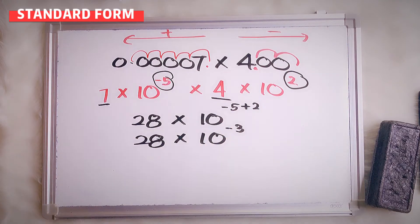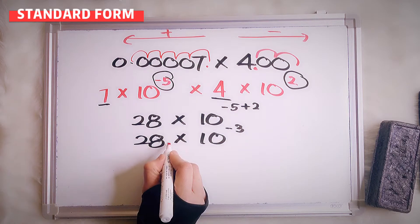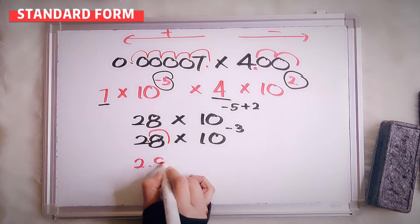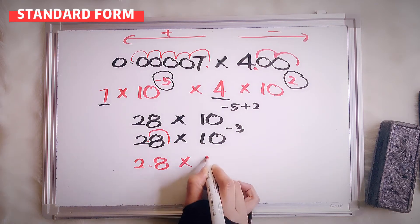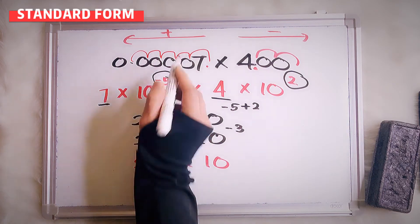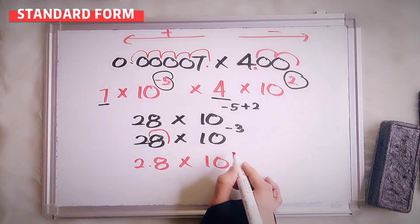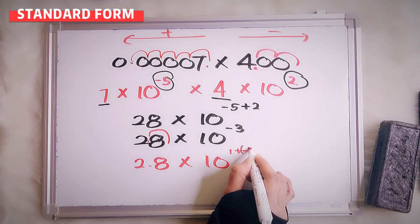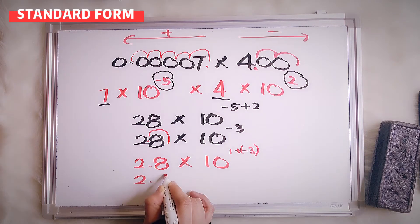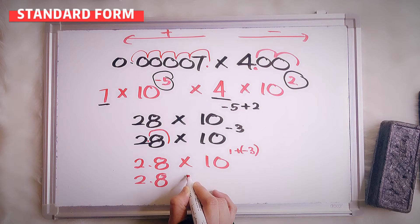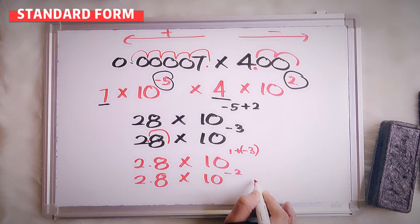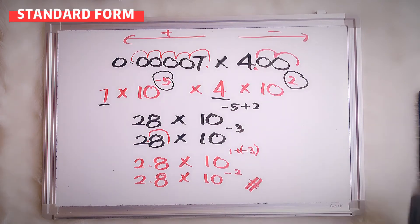So you will have 28 times 10 to the power of negative 3. Now this is 28 — we have to move the decimal. So here it is 2.8, multiplied by 10. We move to the left, so that's positive 1. Plus negative 3 gives us 2.8 times 10 to the power of negative 2.